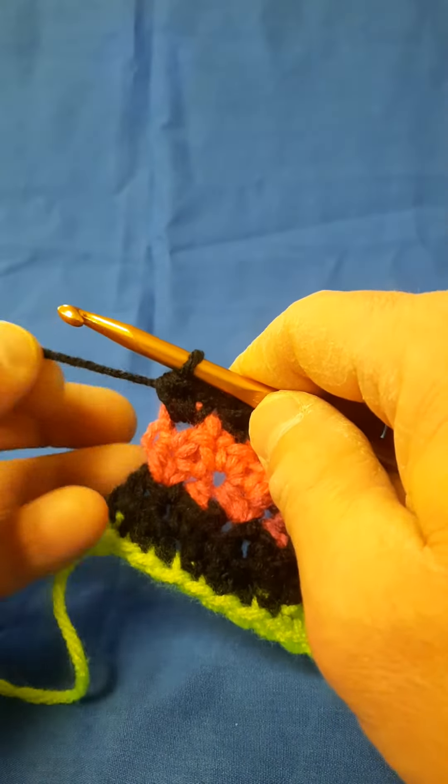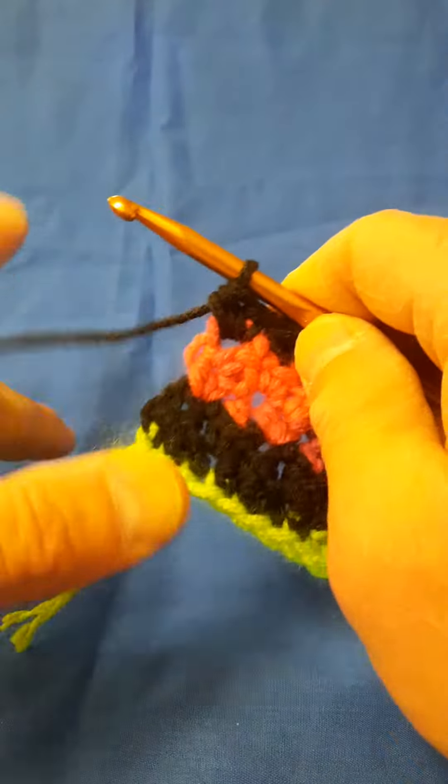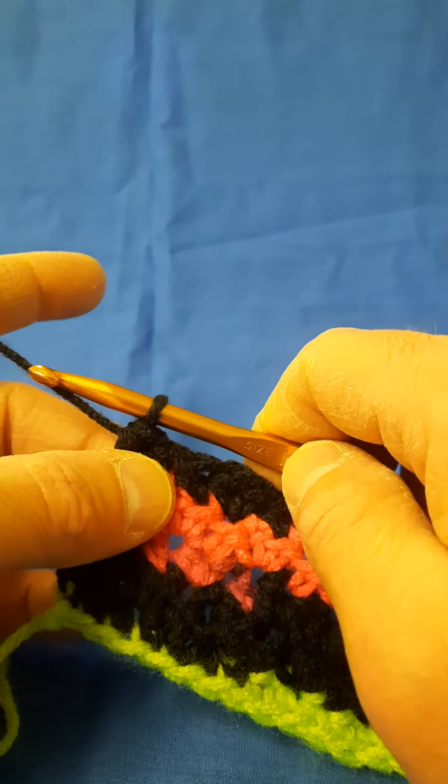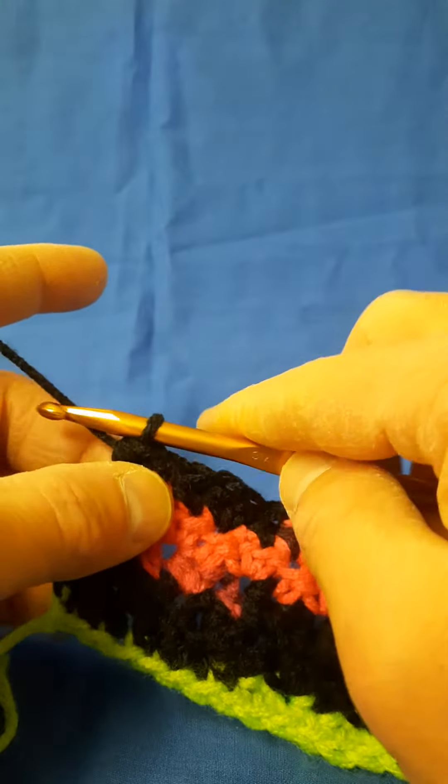Hello and welcome again. It's me, Mr. D. We're working on our tissue cover stitch along and we are on row six.